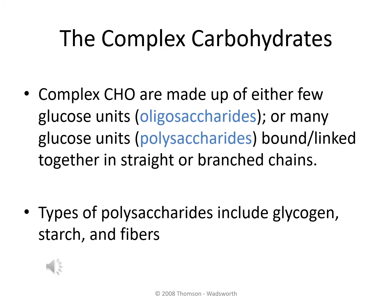We looked at the simple carbohydrates, which included the monosaccharides and disaccharides. Now we're going to move on to the complex carbohydrates. Complex carbohydrates are made up of either just a few glucose units linked together, or many glucose units linked together to form very long strands. Those with only a few glucose units are referred to as oligosaccharides. If there are many glucose units linked together, they're referred to as polysaccharides. The polysaccharides may consist of sugars linked in straight organized chains or in very highly branched configurations. The polysaccharides we will take a look at include glycogen, starch, and the fibers.